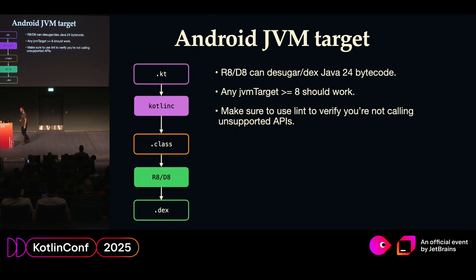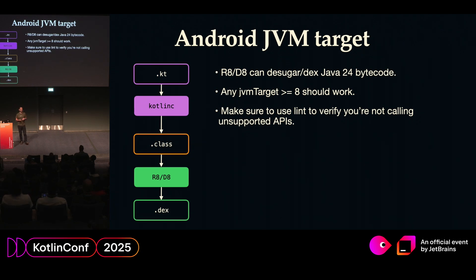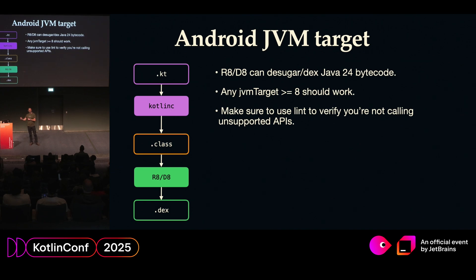Similarly for JVM target, Android does not run a JVM at all — it runs ART, which is Android Runtime, running DEX bytecode compiled by R8 and D8. As it happens, R8 and D8 can completely support Java 24. I did the test just before this conference and was able to compile an Android app targeting JVM Java 24. You shouldn't necessarily target Java 24 there — a lower version means less work for R8 and D8 — but more generally any version should work, and the API calls are going to be desugared anyway.